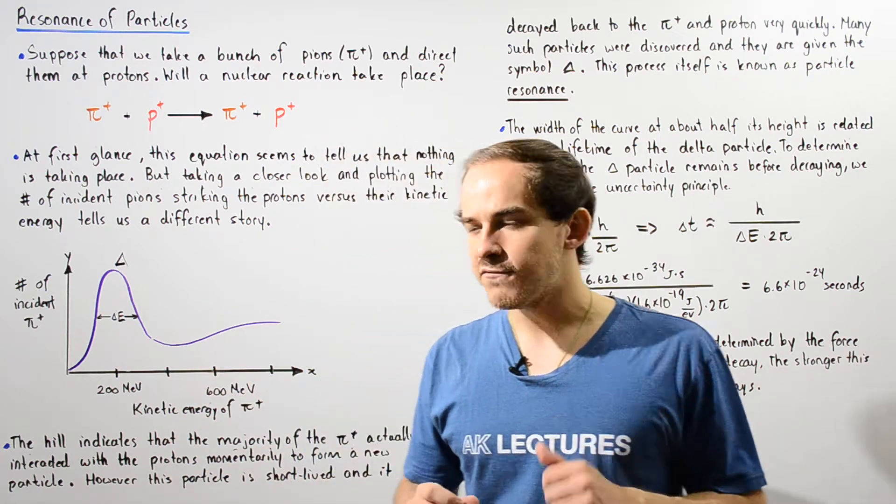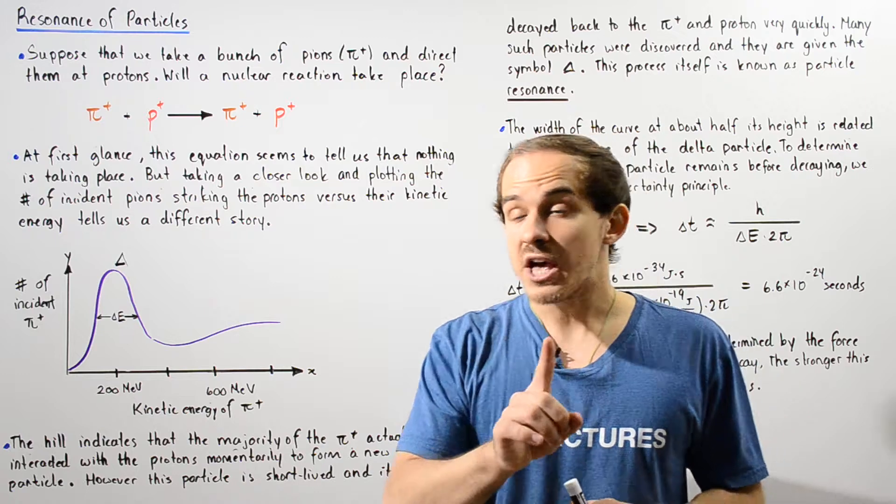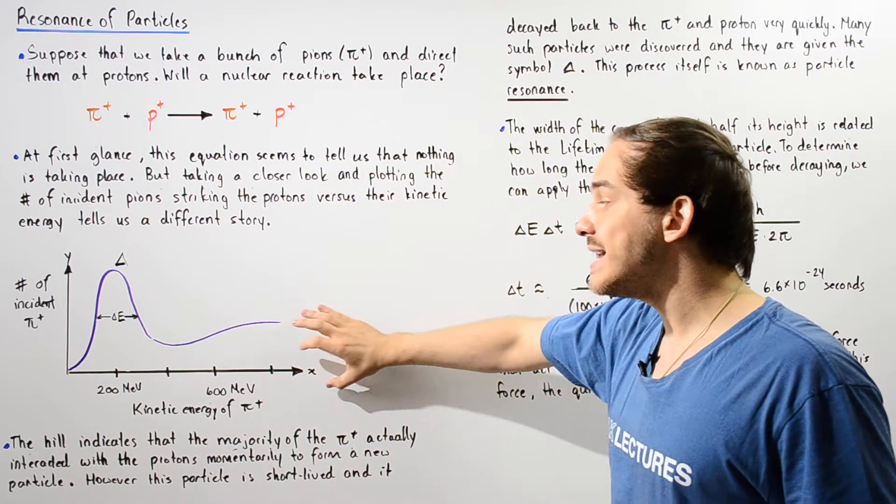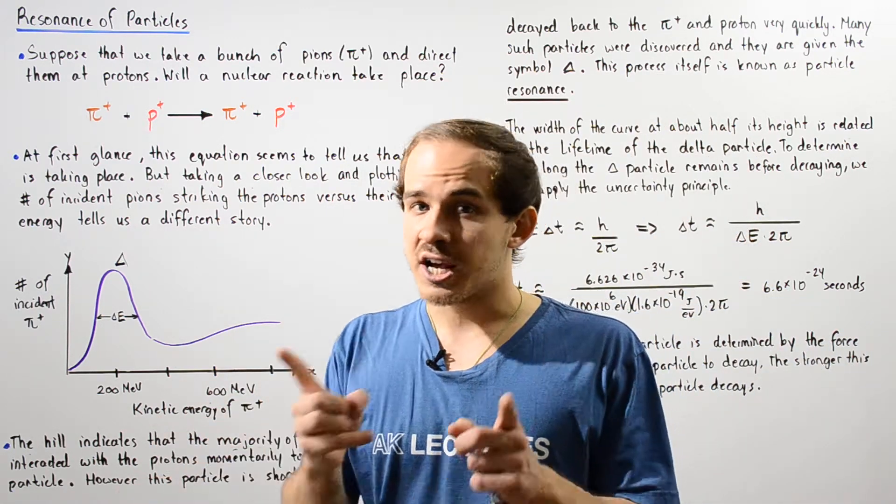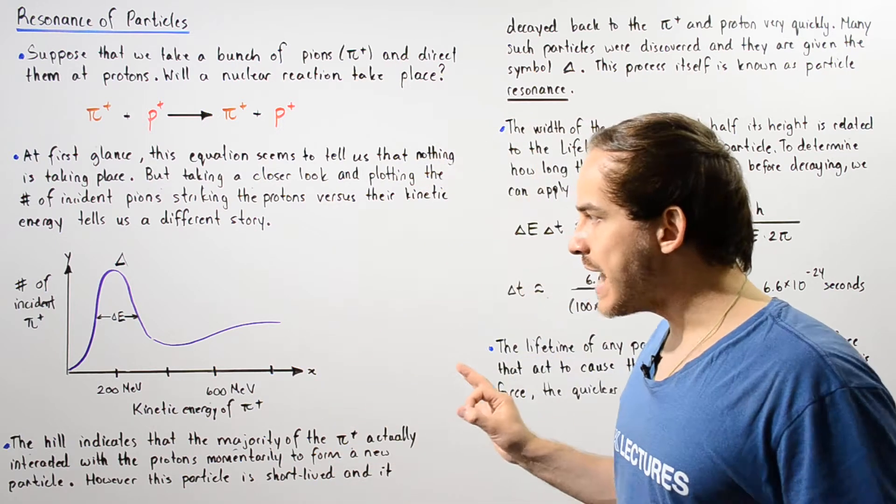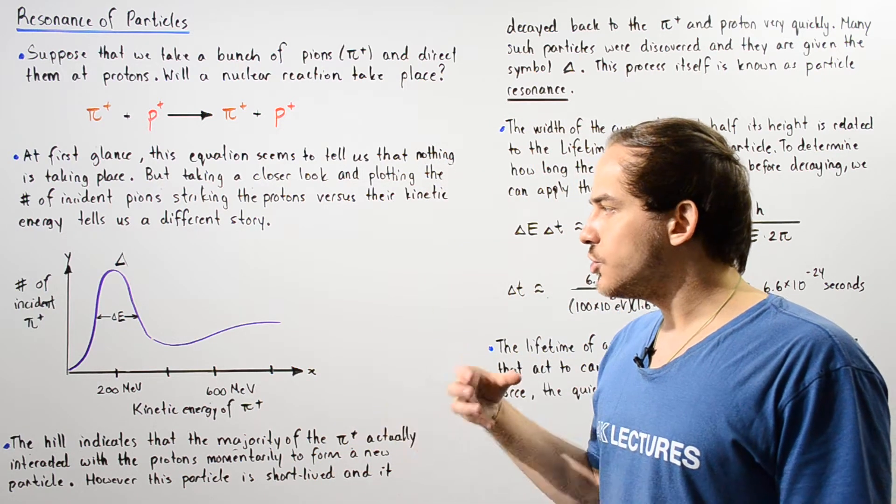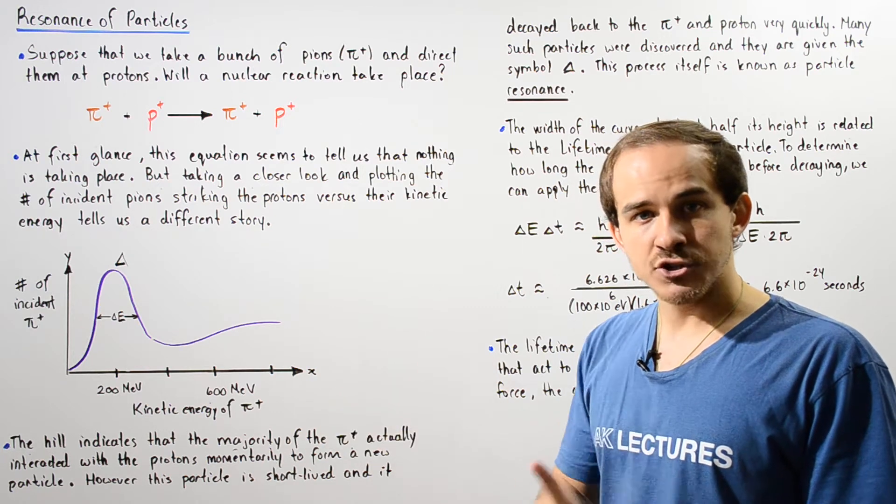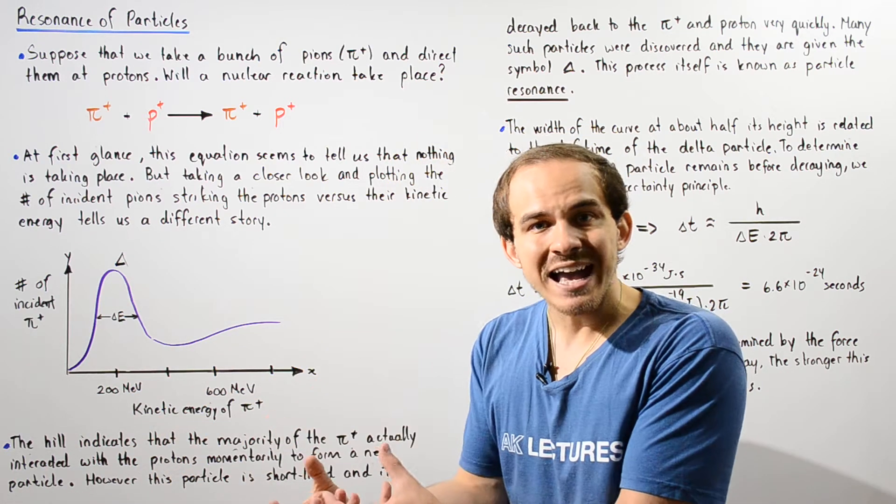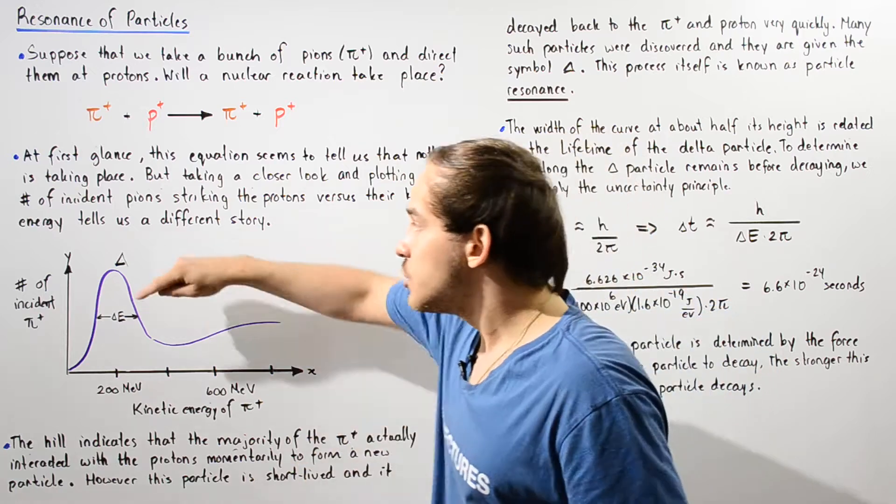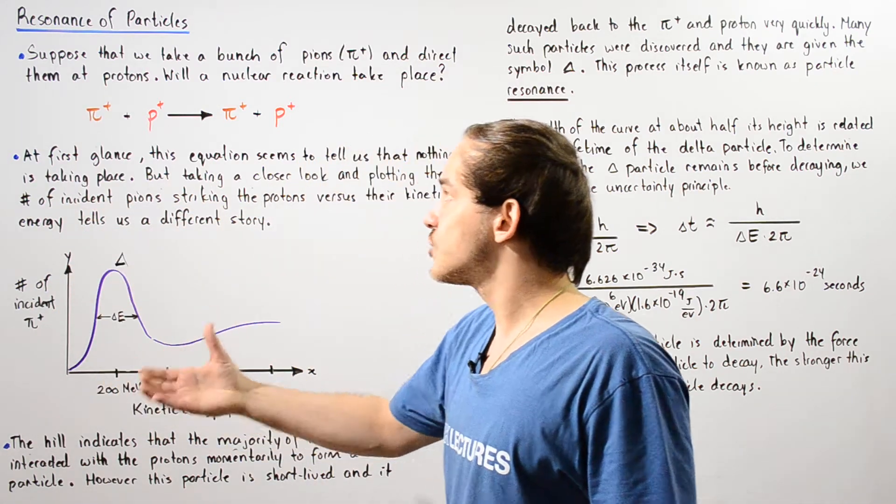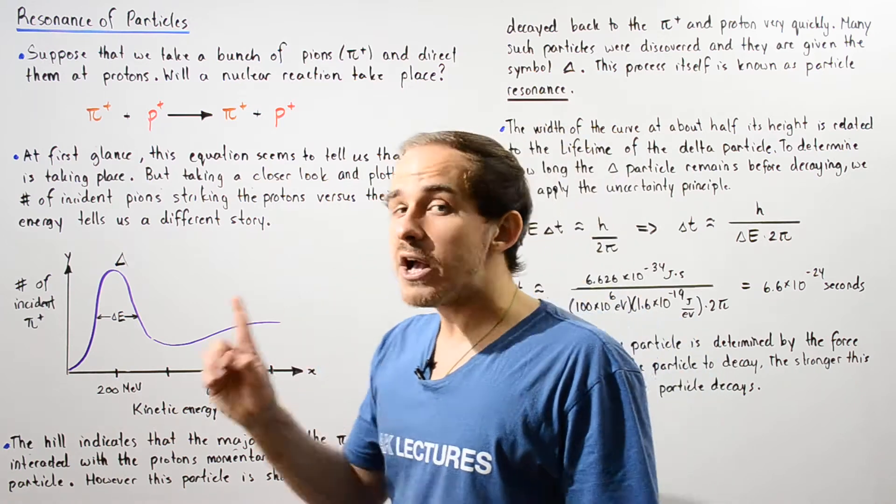If we take a closer look, if we examine the following graph that describes on the y-axis the number of pions interacting with the protons, and on the x-axis the kinetic energy of those interacting pions, we get the following curve. Now Enrico Fermi basically deduced from this curve the following information. He said that what this hill actually represents is the interacting protons and pions. This value designates the number of incident pions that are actually interacting with the protons.